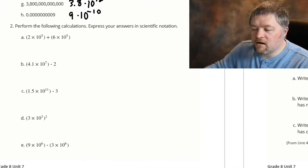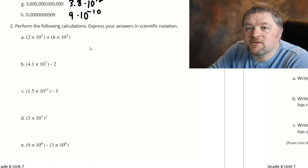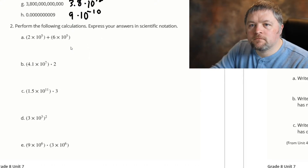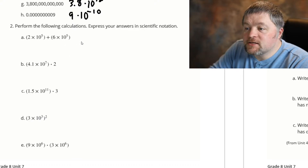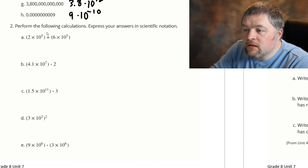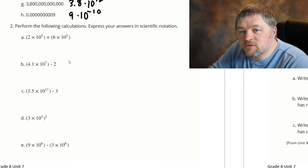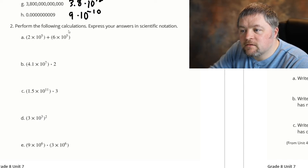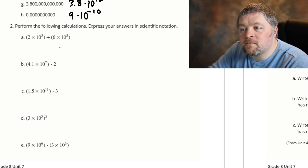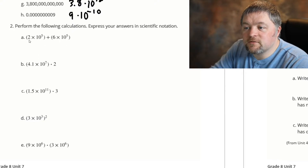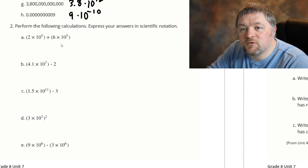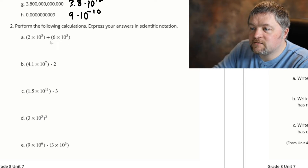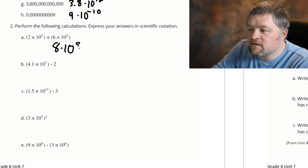The next problems say: perform some calculations, express your answer in scientific notation. This problem is addition. When we're adding, we can't add or subtract the exponents — those rules don't cover addition. However, these powers are the same: 10 to the 5 and 10 to the 5 are the same number. So this problem is very similar to 2x plus 6x. What's 2x plus 6x? Eight x. So 2 times 10 to the 5 plus 6 times 10 to the 5 is 8 times 10 to the 5.